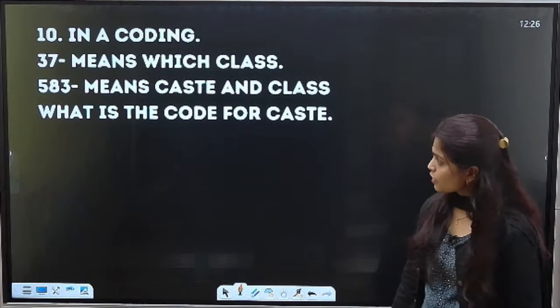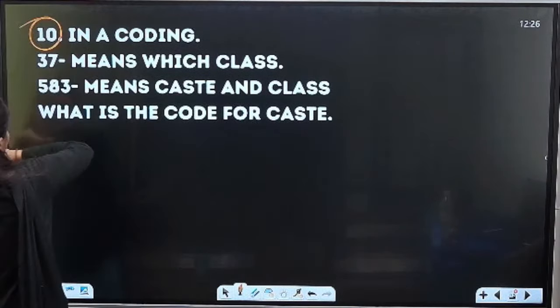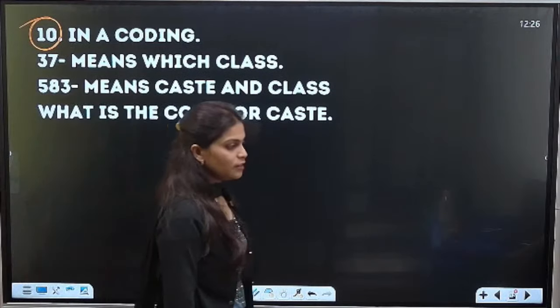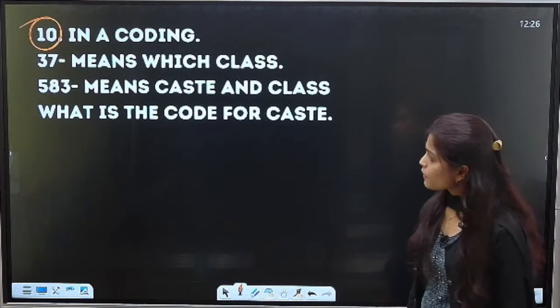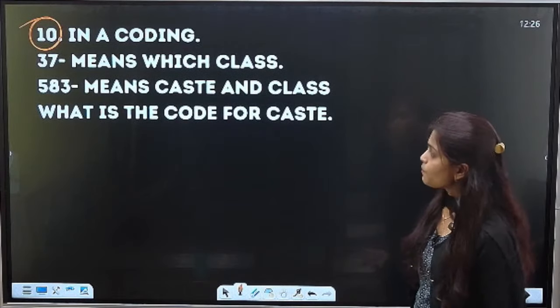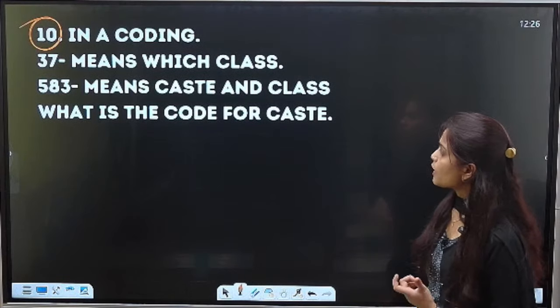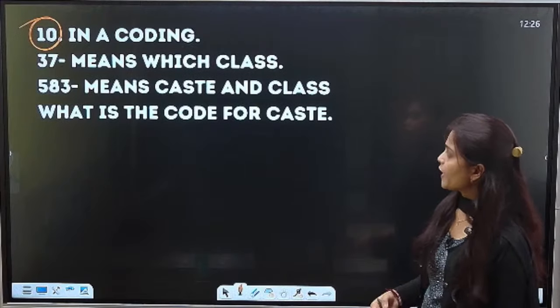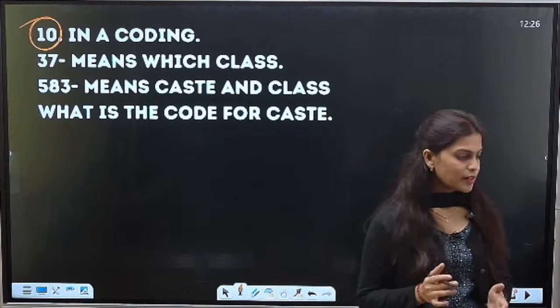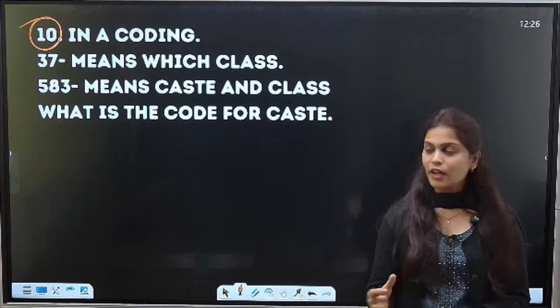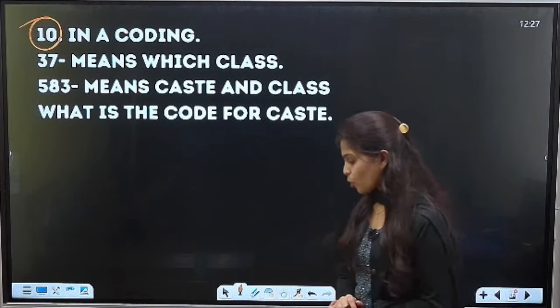So tenth question hoga na. In a certain coding. Tenth question. In a certain coding. Yes. So 37 means which class. 583 means caste and class. Ok? What is the code for caste? Caste. Caste ke code A. N barathe. Caste ke code A. N baratheyan. Tahiri haadha hai. So code na nwe barathe. Ok? Options code bae ka?